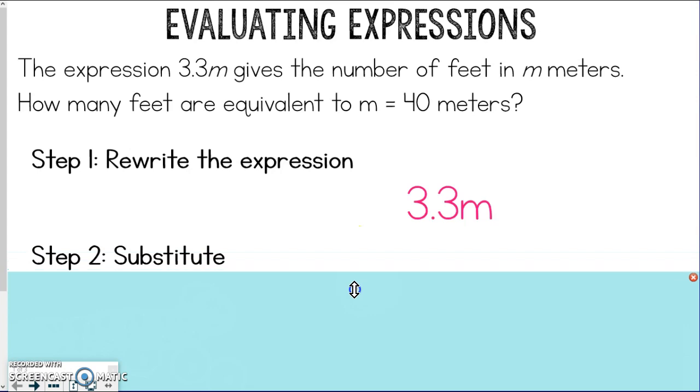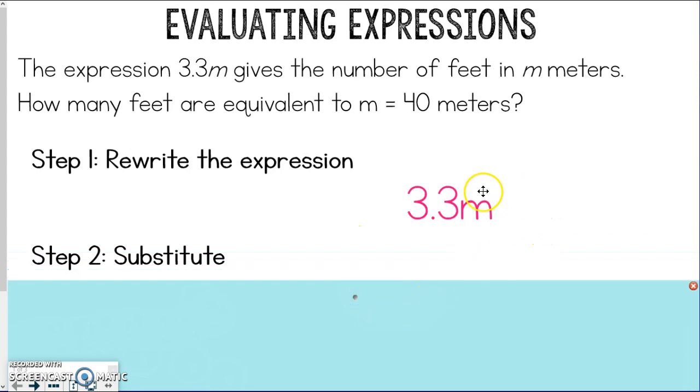Second step that they also give you is to substitute. So we just need to know, well, what is m that they're asking for us to use? And they tell us m equals 40 meters. So we're going to substitute that in. Notice how I put the multiplication sign. So we got 3.3 times 40.